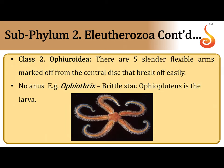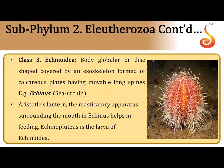Another class under subphylum Eleutherozoa is Ophiuroidea, commonly referred to as the brittle stars. You can notice how they have serpentine arms, and they move by quick progression — therefore they are sometimes also referred to as serpent stars. There is a central disk to which the arms are attached, and the arms are very fragile and can break off easily, which is one reason they are called brittle stars. The larva of these forms is referred to as the ophiopluteus larva.